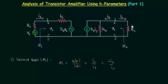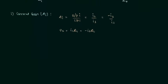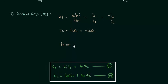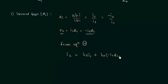Voltage drop across the load resistance is equal to V2, which is equal to minus I2 multiplied by RL. I will use H-parameter equations, and from equation number 4 we have current I2 equal to HF·I1 plus HO·V2, and in place of V2 we will write minus I2·RL.